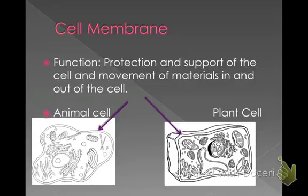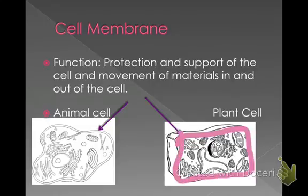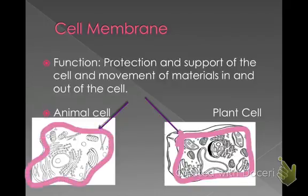Our next organelle is the cell membrane, and again you are already familiar with this. It goes along the outside of the cell, protects and supports the cell, and is in charge of letting certain things in and out. It is called semi-permeable, which means it selects which things can come in and which things cannot, and we're going to talk about that more as we get deeper into talking about animal and plant cells.